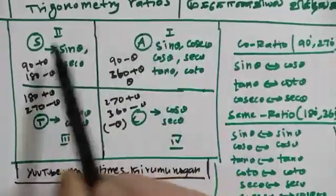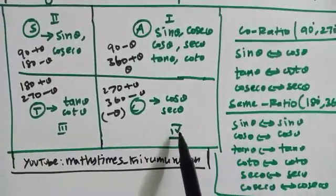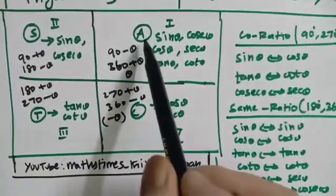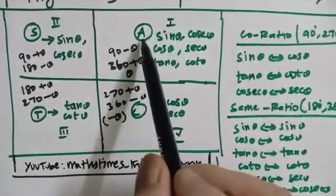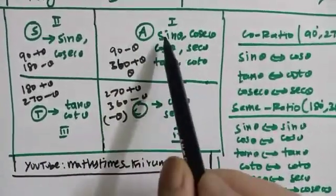This is the first quarter, second quarter, third quarter, and fourth quarter. What is the first quarter? How should you use it? Everything is all positive.